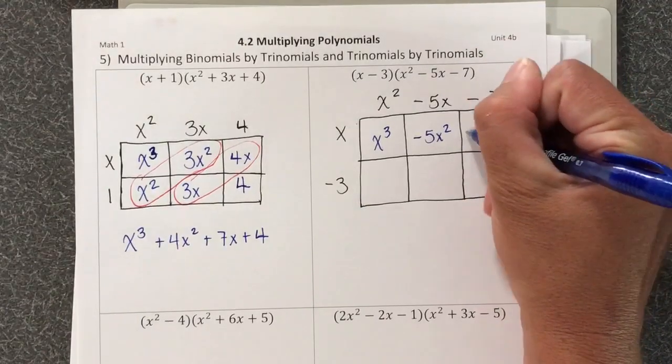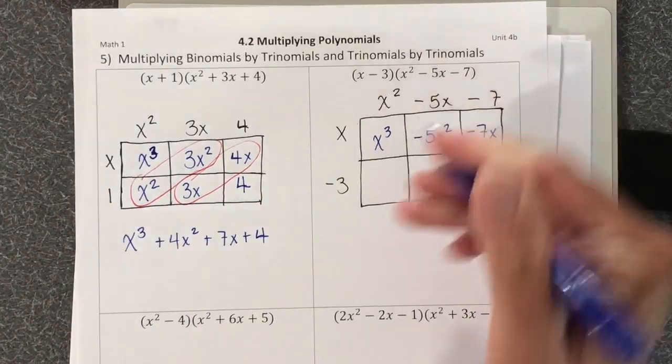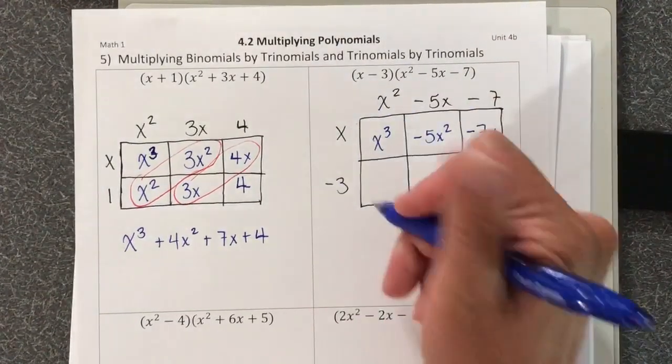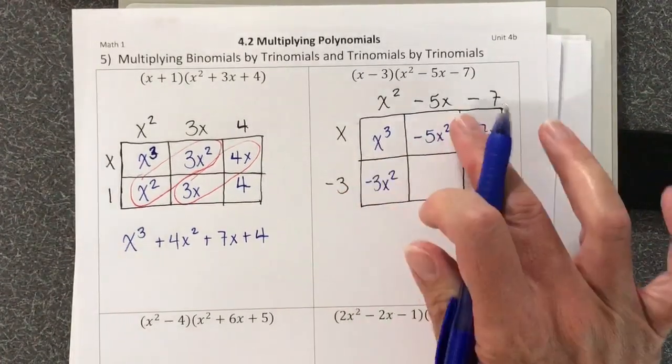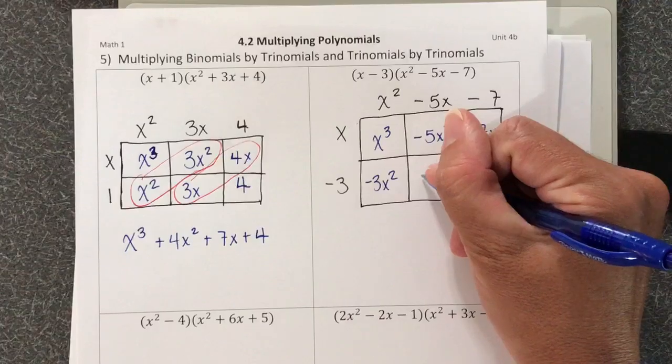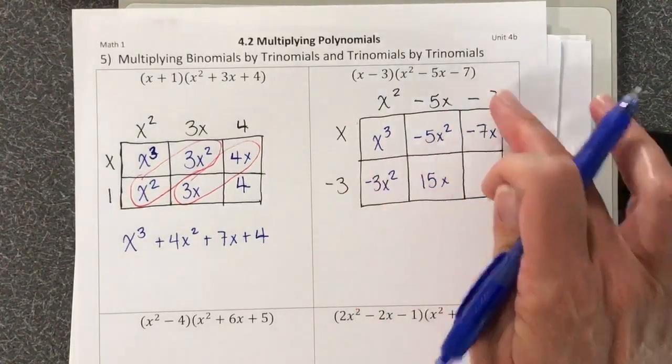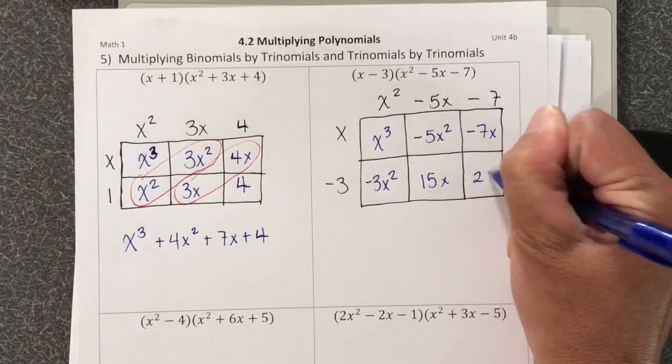x times negative 7 is negative 7x. Negative 3 times x squared is negative 3x squared. Negative 3 times negative 5x is positive 15x. Negative 3 times negative 7 is 21.